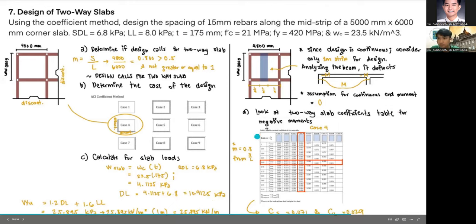Our next step is, since the design is continuous, we'll consider only 1m strip for the design. Analyzing the beam, we can say that it deflects in this manner, going down, so negative moment, then positive moment since it's coming up, and our assumption for the continuous end moment is 0. Our next step is to look at the two-way slab coefficient tables for negative moments.